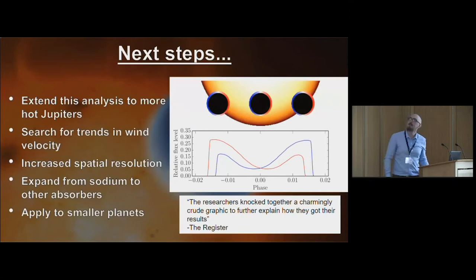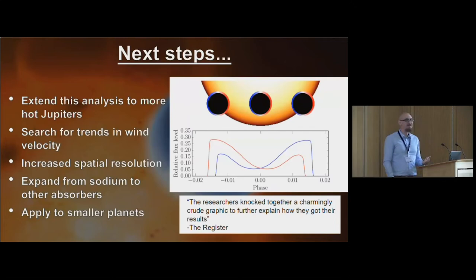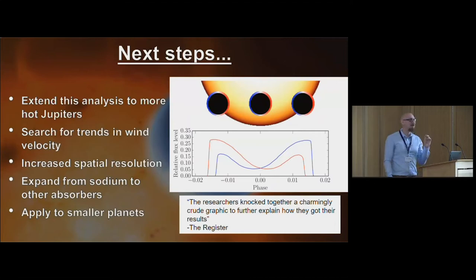Where to go next from here: I know this technique works, and I want to extend this analysis to more hot Jupiters, search for trends in wind velocity, increase the spatial resolution a little further, and expand from sodium to other absorbers. One thing that really bugged me last time is that my plots apparently weren't very photogenically pleasing to some press releases. I got a wonderful quote from The Register that my graphics were 'charmingly crude' - and that's bugged me for years, so I want to correct the record with nicer plots.